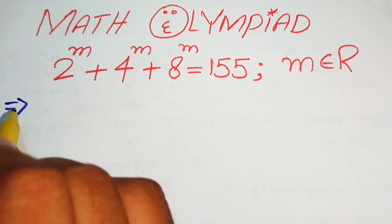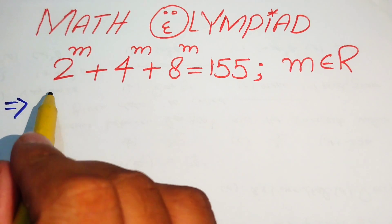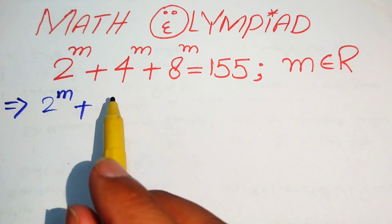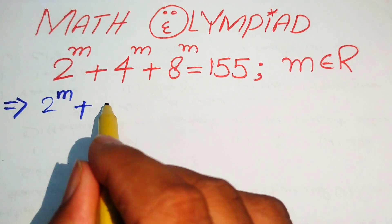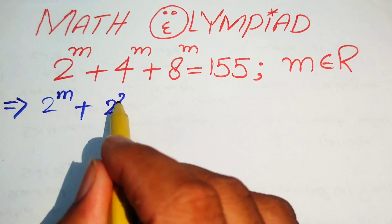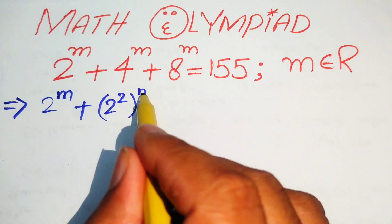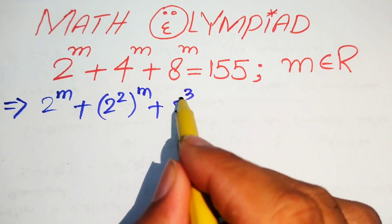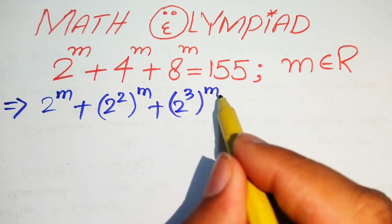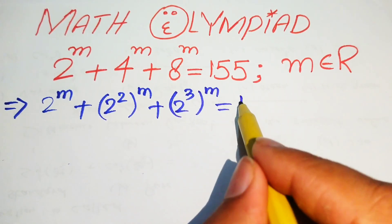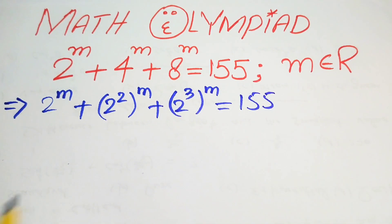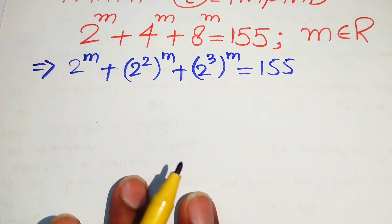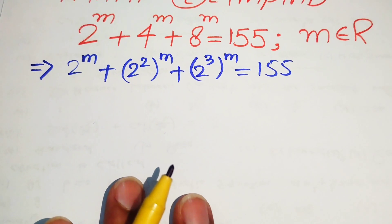The very first step is to rewrite this equation. We have 2 to the power of m, plus 4 to the power of m — where we write 4 as 2 squared, whole to the power m — plus 8 to the power of m — where we write 8 as 2 cubed, whole to the power m — equals 155.